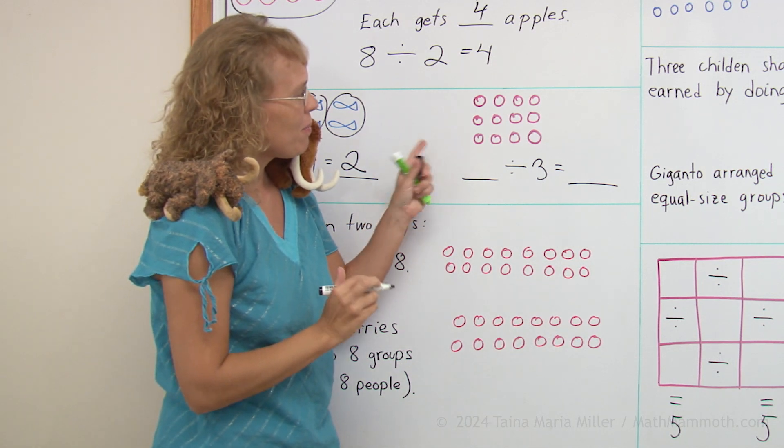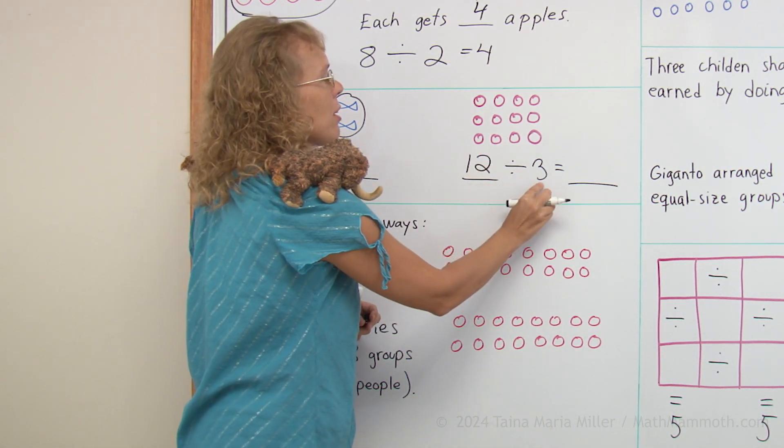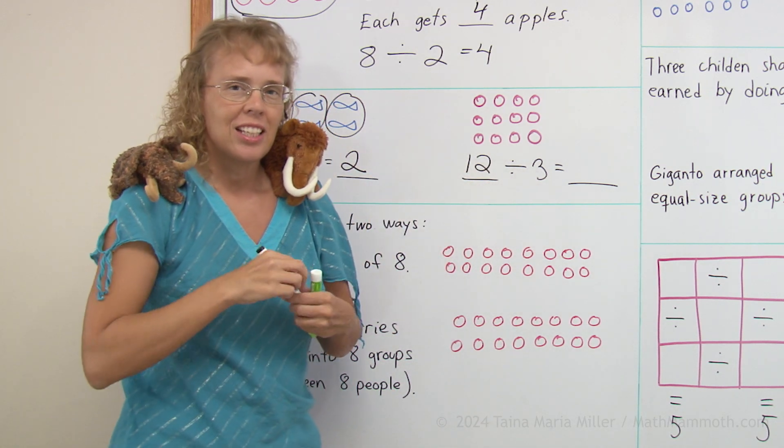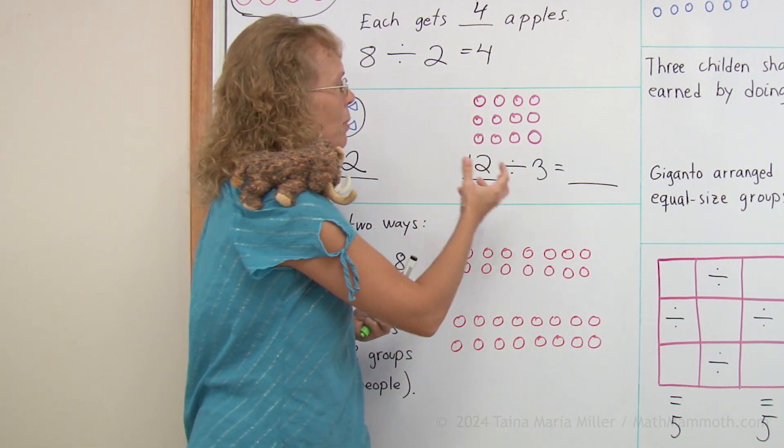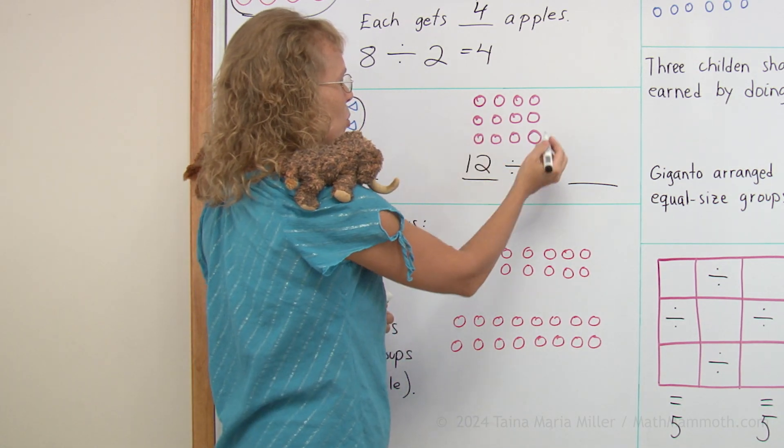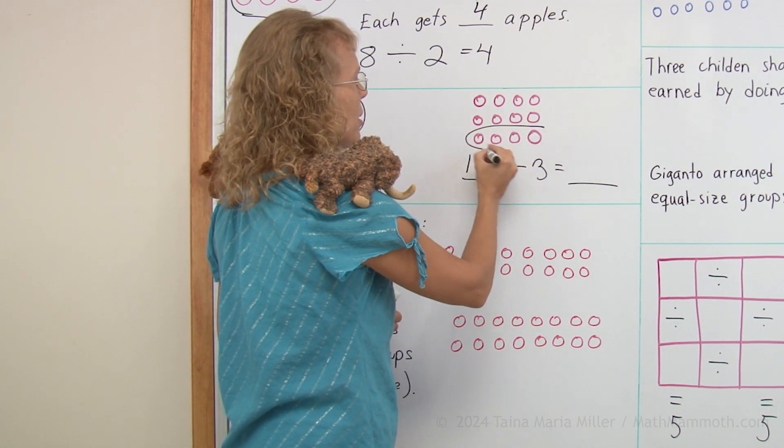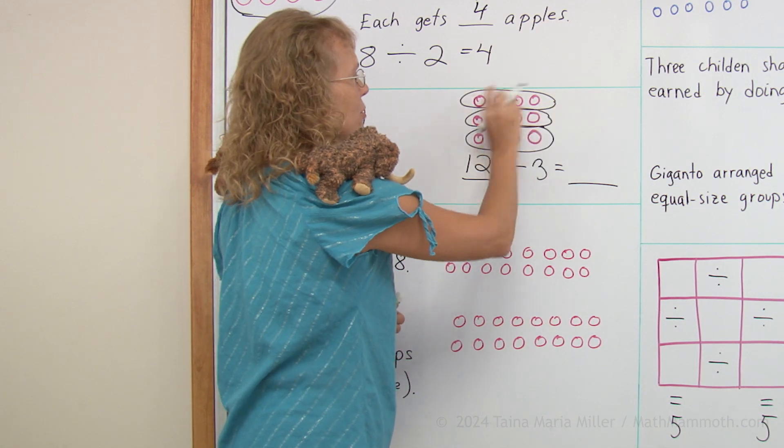Over here I have 12 berries. Dividing by 3, think of it as sharing evenly between 3 people. How many will each person get? Each person will get 4 berries.